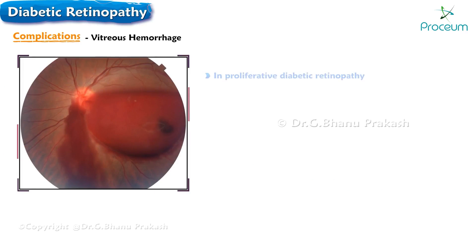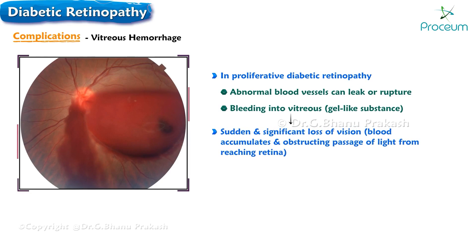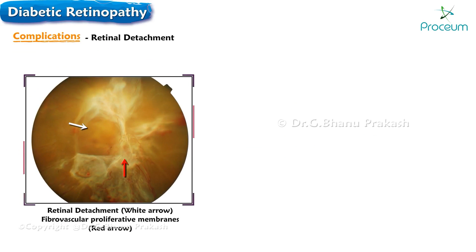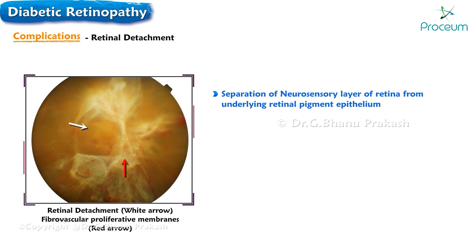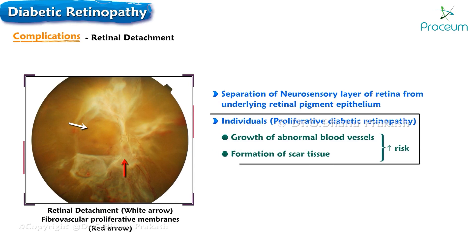Vitreous hemorrhage is a potential complication of proliferative diabetic retinopathy, occurring when abnormal blood vessels leak or rupture, resulting in bleeding into the gel-like vitreous. This can lead to a sudden and significant loss of vision if a considerable amount of blood accumulates, obstructing the passage of light to the retina. Retinal detachment is characterized by the separation of the neurosensory layer of the retina from the underlying retinal pigment epithelium, and can result in sudden and complete loss of vision in the affected area.